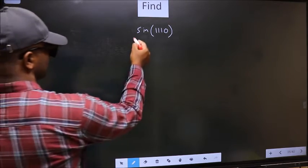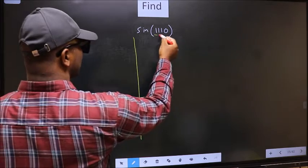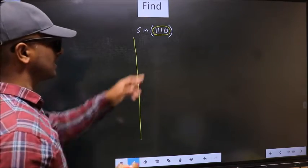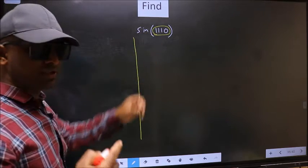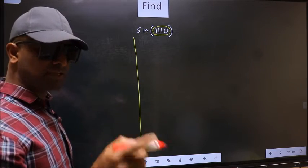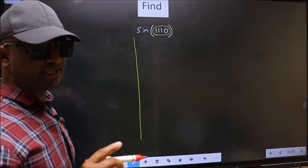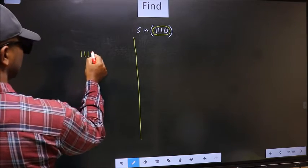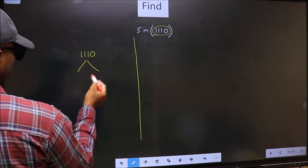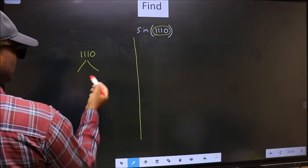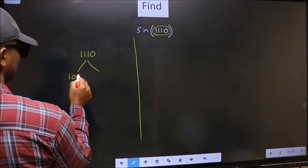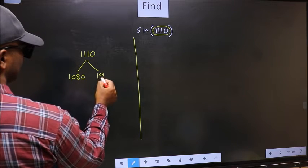See, here we have 1110. Now you should check 1110 lies between which multiples of 180. What I mean is 1110 lies between which multiples of 180. That is 1080 and 1260.